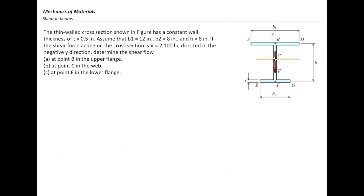The thin-walled cross-section shown has a constant wall thickness t equal to half an inch. Given: b1 is 12, b2 is 8, and h is 8 inches. The shear force acting on the cross-section is V equal to 2,100 pounds directed in the negative y direction. Determine the shear flow at point b (upper flange), at point c (centroid), and at point f (lower flange).